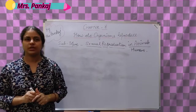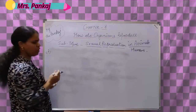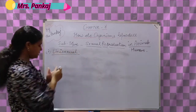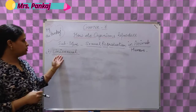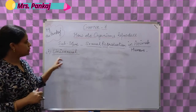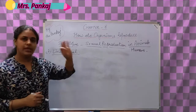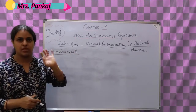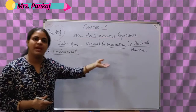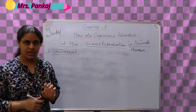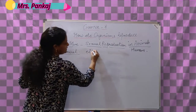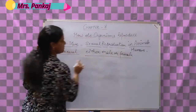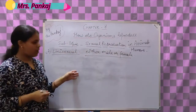Now in humans, before going to start this topic, I just want to tell you a few things. Humans are unisexual. Now what does this term mean? Unisexual means that an organism can represent either male or female - that means only one sex. One organism can be either male or female; it cannot be both. The unisexual organism is either male or female.